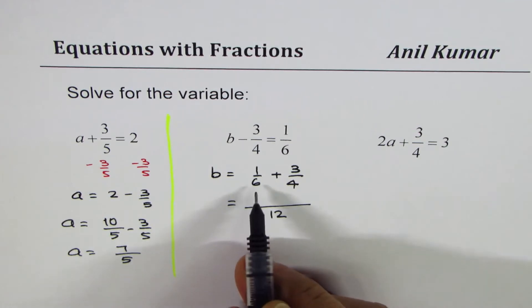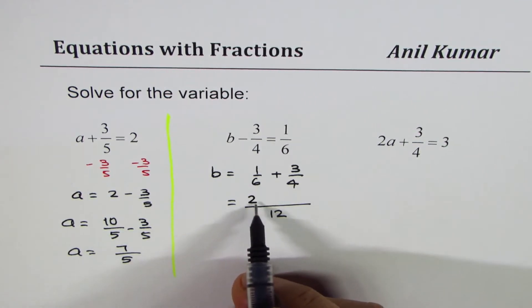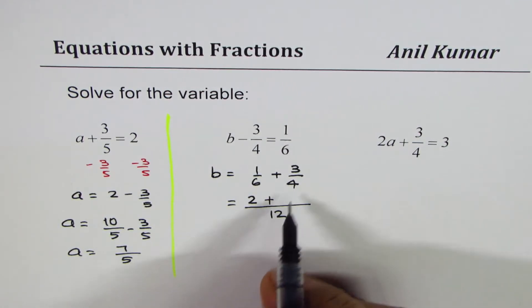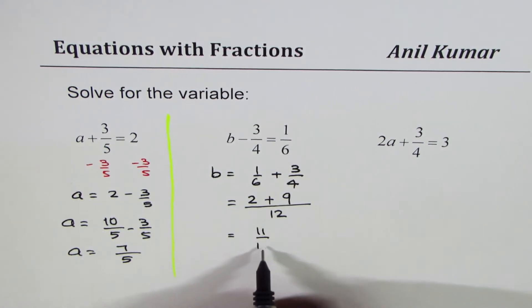To make 6 as 12, I would multiply by 2. So I get 2 plus to make that as 12, multiply by 3. 3 times 3 is 9. And that gives us 9 plus 2 is 11 over 12 as the value of b.